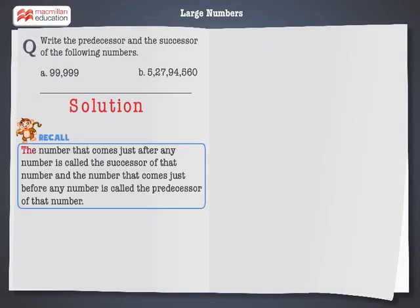Let's recall that the number that comes just after any number is called the successor of that number. And the number that comes just before any number is called the predecessor of that number.